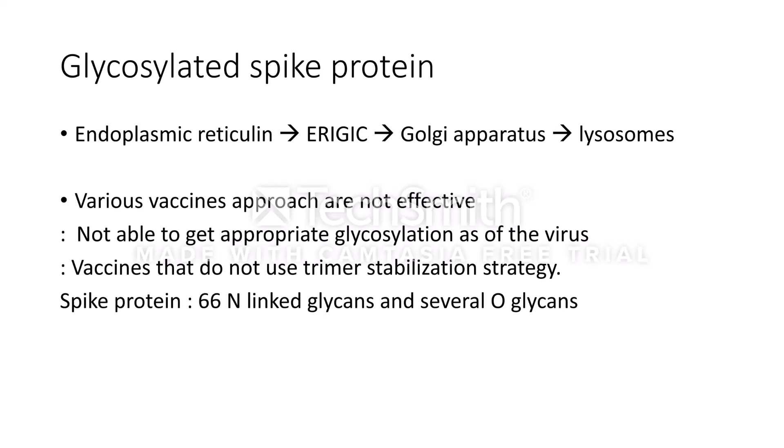When the virus captures the host cell machinery, glycosylation of the spike protein occurs as follows: first, it goes to the endoplasmic reticulum where N-glycosylation begins. Here, pre-processed N-glycans are attached to the NXT sequon sites — that is, asparagine, then any amino acid except proline, then serine or threonine.